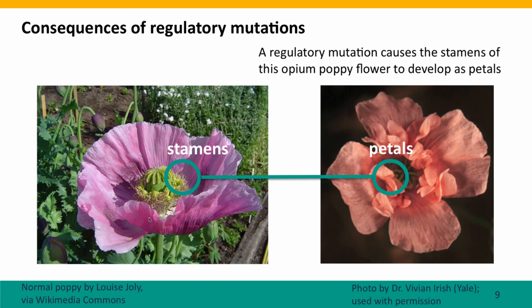Here's a normal poppy — it has a typical structure with simple petals and stamens in the center that produce pollen. Here's a mutant poppy: it doesn't have any stamens at all. Instead, the stamens have grown into little petals, making it a very pretty flower. But it's unable to reproduce because it doesn't make pollen.